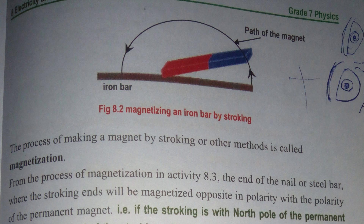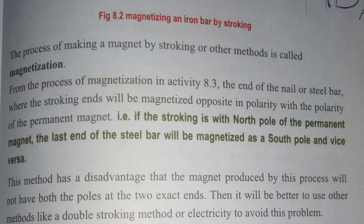The process of making a magnet by stroking or other methods is called magnetization. The end of the nail or steel bar where the stroking ends will be magnetized opposite in polarity to the polarity of the permanent magnet used.